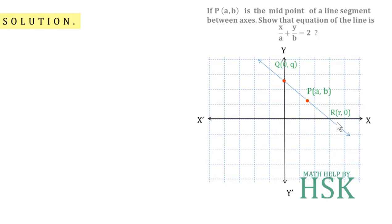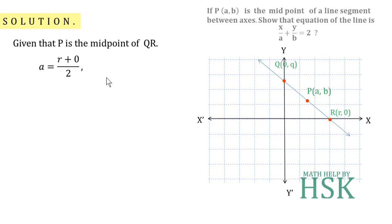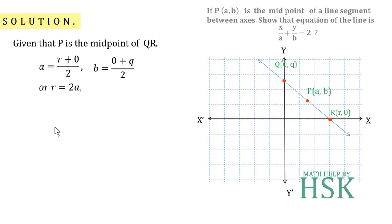If I mark this intercept point as Q and the other as R, then P is given as the midpoint of QR. Applying the midpoint formula: a = (0 + R)/2, meaning the midpoint's x-coordinate equals the sum of abscissas upon 2. Similarly, b = (0 + Q)/2, the sum of ordinates upon 2. So R = 2a and Q = 2b.